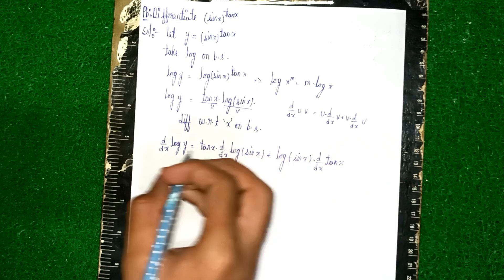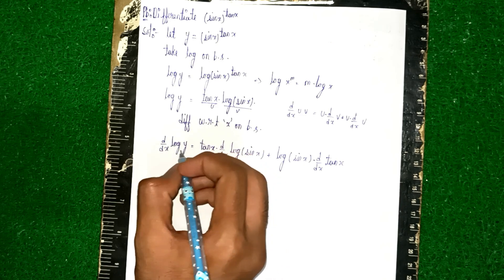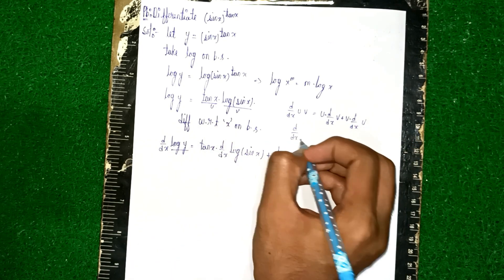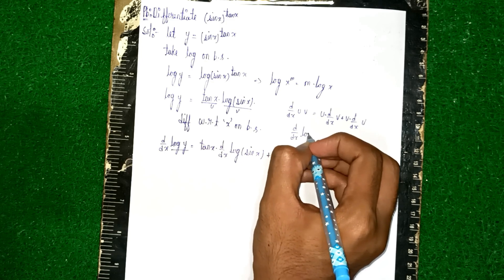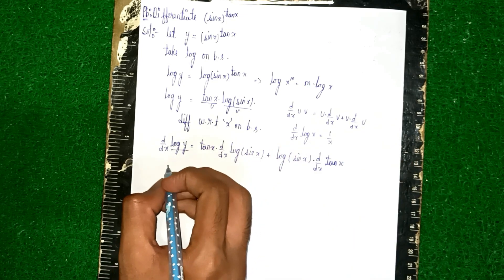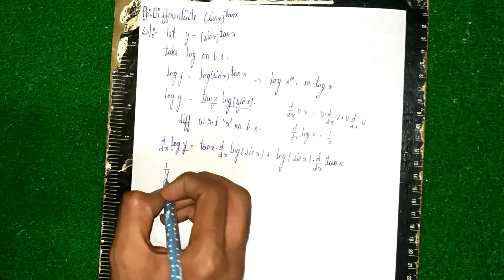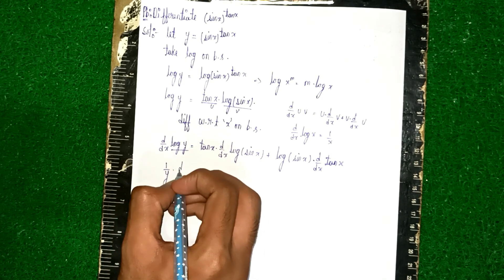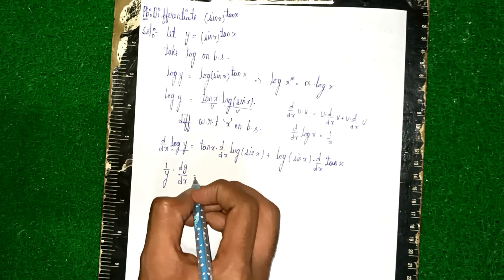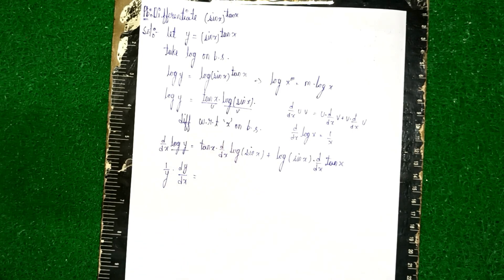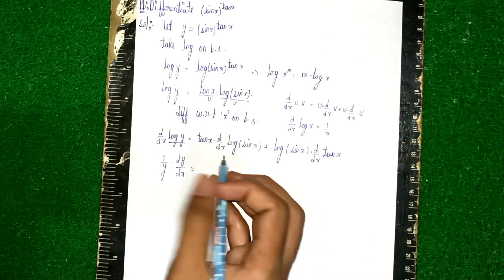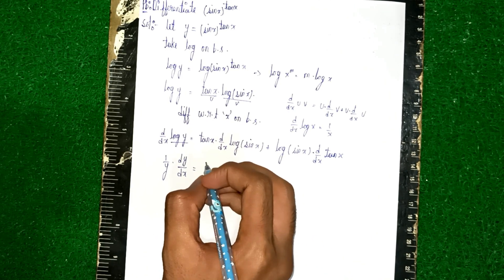For d/dx of log(y), we use d/dx(log(x)) = 1/x, so it becomes (1/y)·dy/dx on the left side. Now we need to differentiate the right-hand side terms.